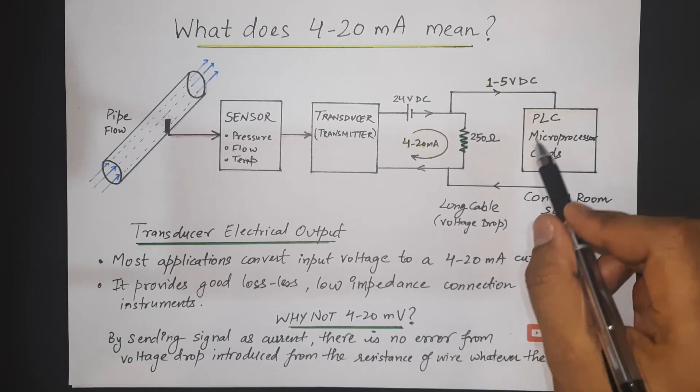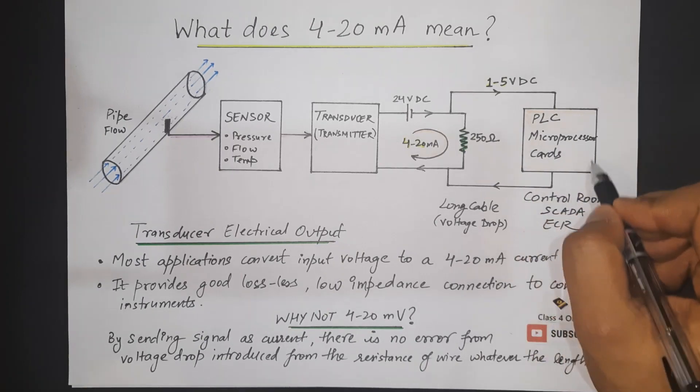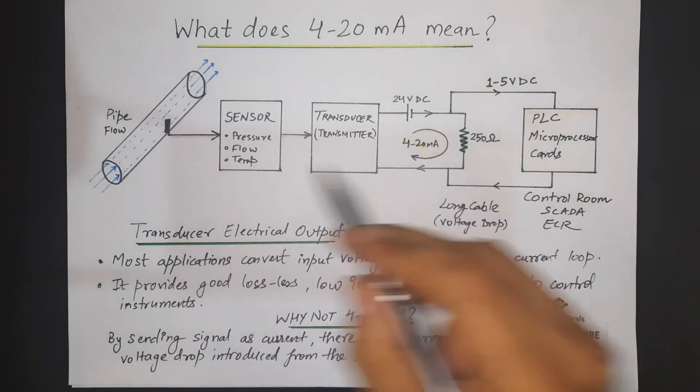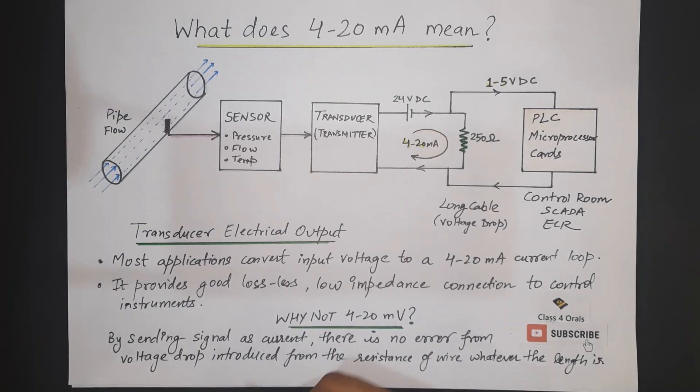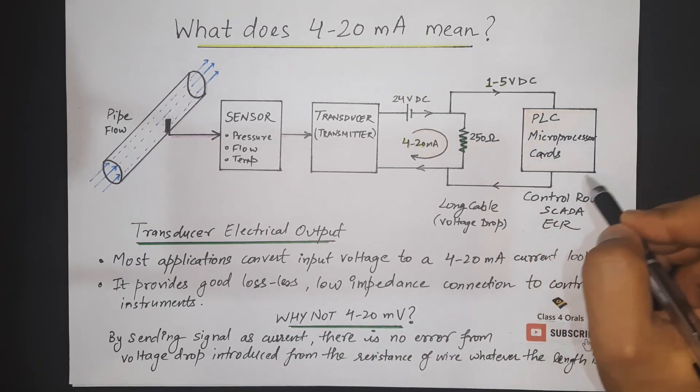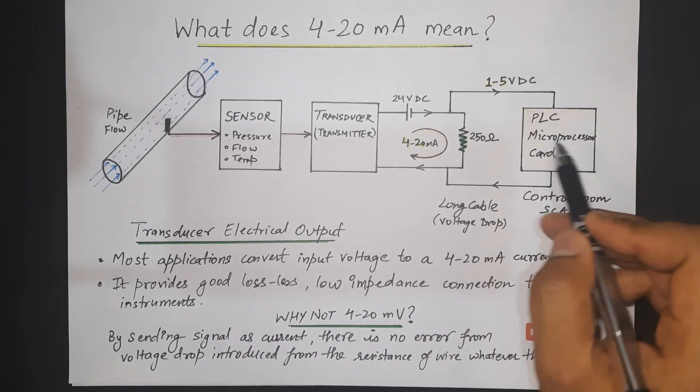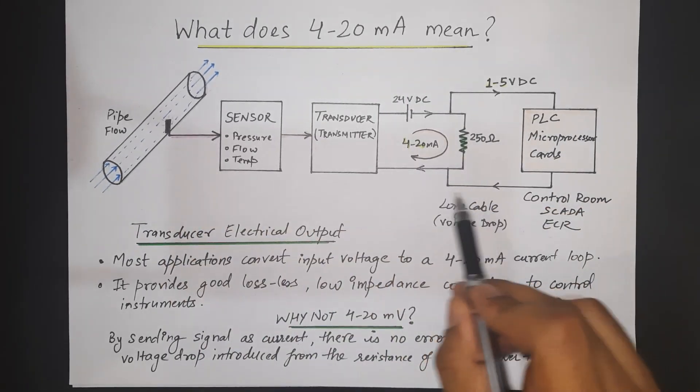Basically the control room or the control panel where we are going to actually measure the value of the pressure in the pipe. So this system is in the control room and this has been located from the system by long cable.